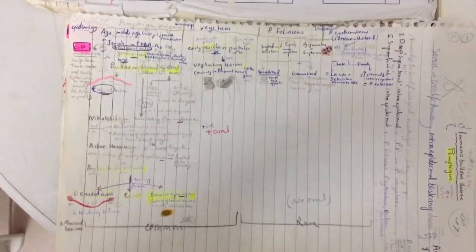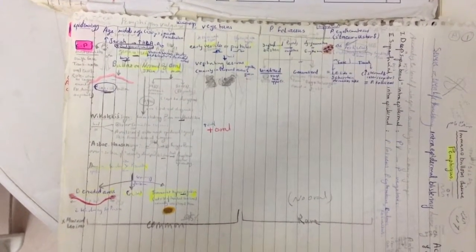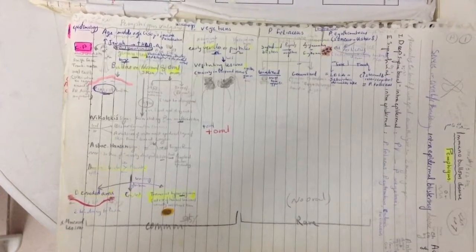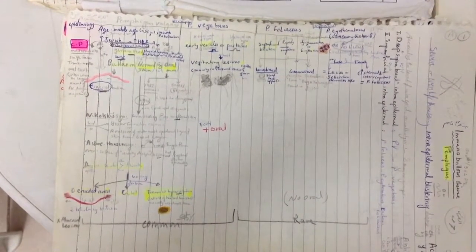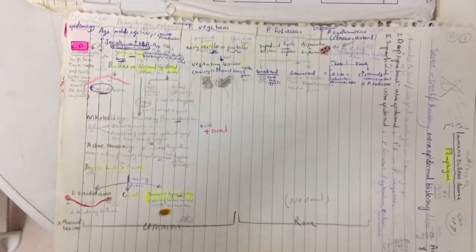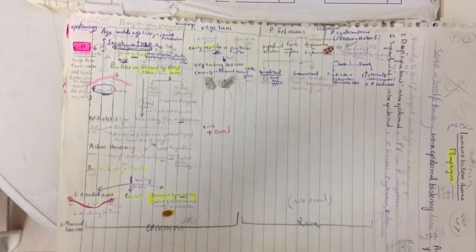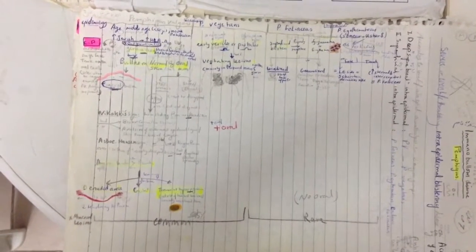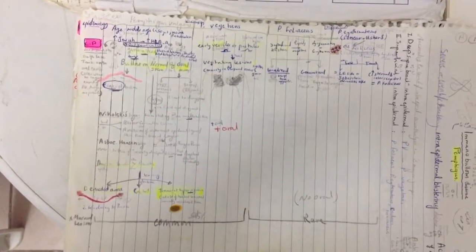The clinical picture of pemphigus vegetans: early there are vesicles or pustules that heal with vegetating lesions, especially in the axilla and groin, and there is also oral mucosal affection.